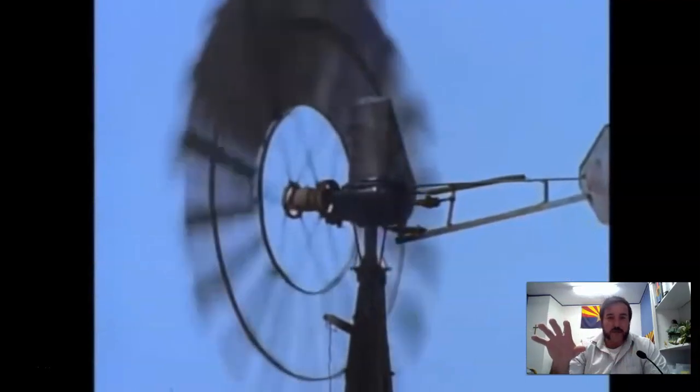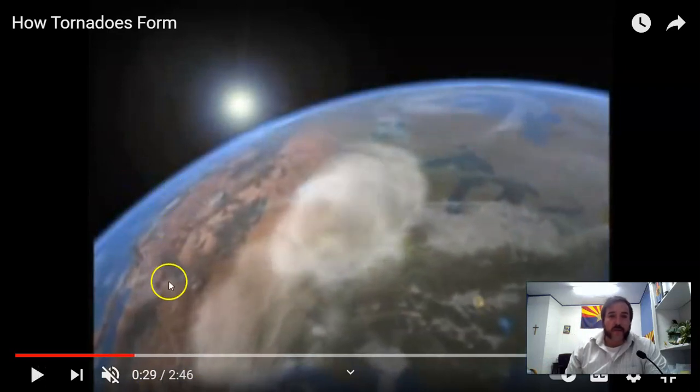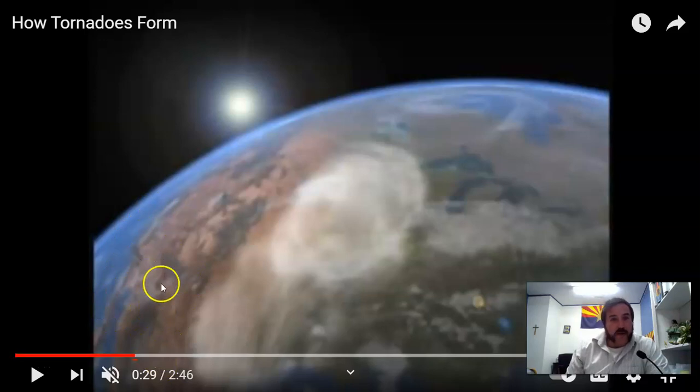Usually it starts with just a sunny day here and then the winds start picking up. And here's a good picture here I want to show you, okay? You might notice this is Mexico right here. Here's California and here's Arizona. Here is the country of Canada. You might recognize the Great Lakes here. There's Michigan, the state of Wisconsin, something like that.